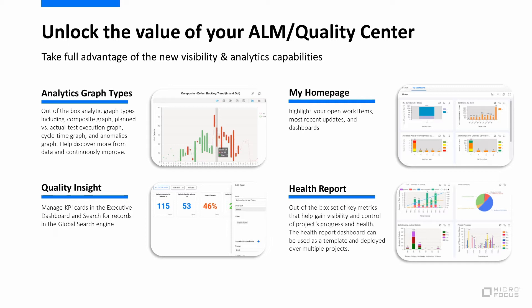These new graph types help you to analyze your data and continuously improve. With the new quality insight component, you can manage API cards in the executive dashboard to monitor the performance of the projects you're working on, and search for records on one or multiple projects in the global search engine. The new My Homepage module highlights your open work items, most recent updates, and favorite dashboard.